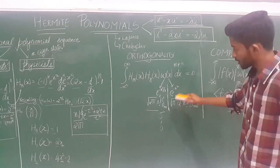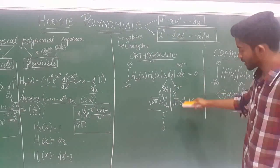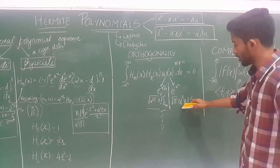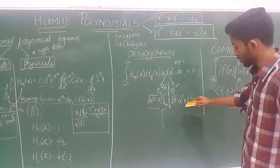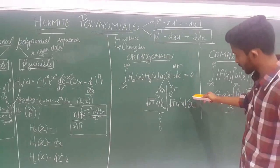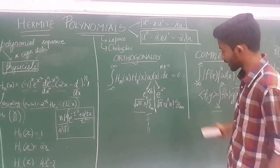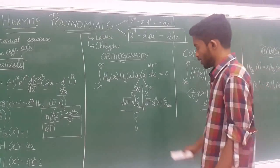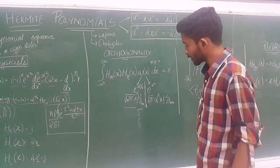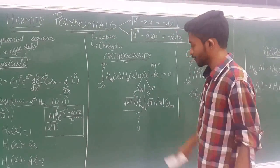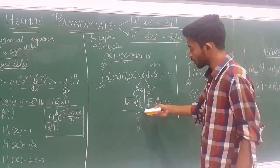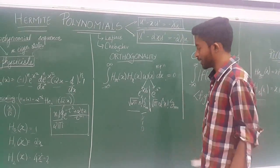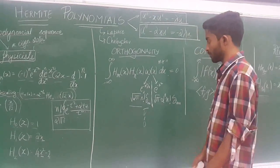Similarly, e^(-x²) can be written as √π × 2^n × n! × Dirac delta function. We know that the Dirac delta function is 1 when m = n and 0 when m ≠ n.